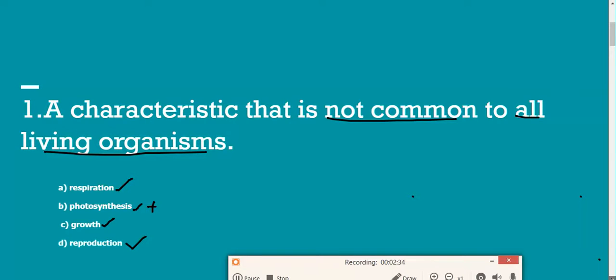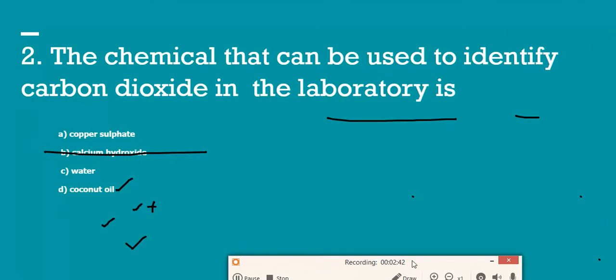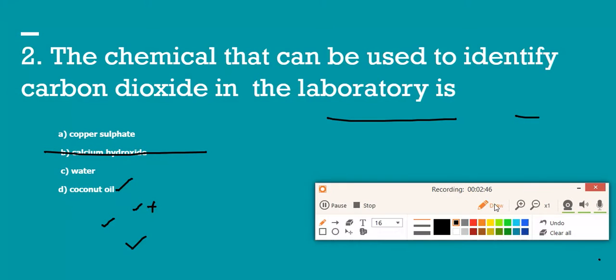We'll go to the next question. It says: chemicals that can be used to identify carbon dioxide in laboratory. How do you identify carbon dioxide? You have four options: copper sulfate, calcium hydroxide, water, and coconut oil. What you do if you suspect that something is carbon dioxide is you bubble this gas into calcium hydroxide or lime water. What happens is you will see a white cloud precipitation. If that happens in lime water, you can confirm that the gas you bubbled was carbon dioxide. So there you go, this is your answer for that question.